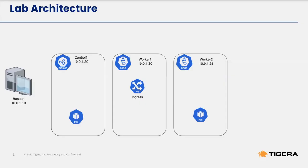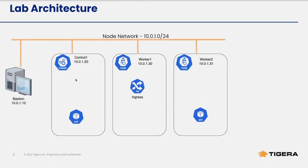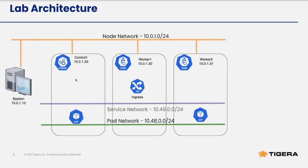Before we begin, let's take a look at the lab environment. We have a three-node Kubernetes cluster installed using kubeadm and a bastion host where we will be running all of our commands from. We have one master node and two worker nodes. The node network is 10.0.1.0/24, the pod network is 10.48.0.0/24, and the service network is 10.49.0.0/24. The Calico components whose metrics we're interested in are Calico node (specifically Felix), Calico Typha, and Calico kube controllers.